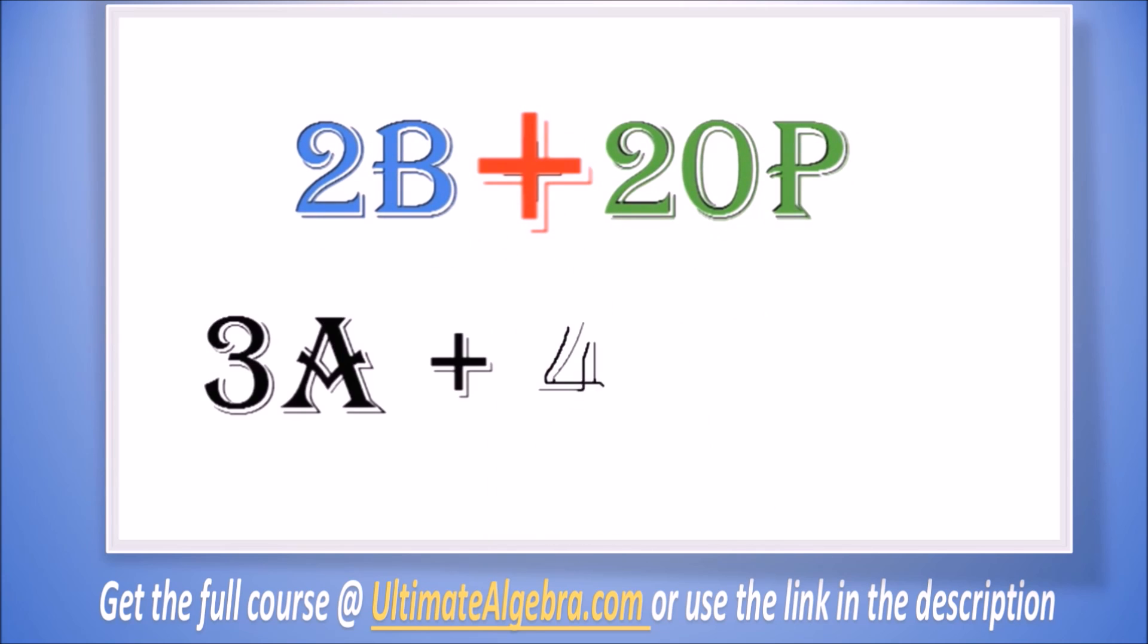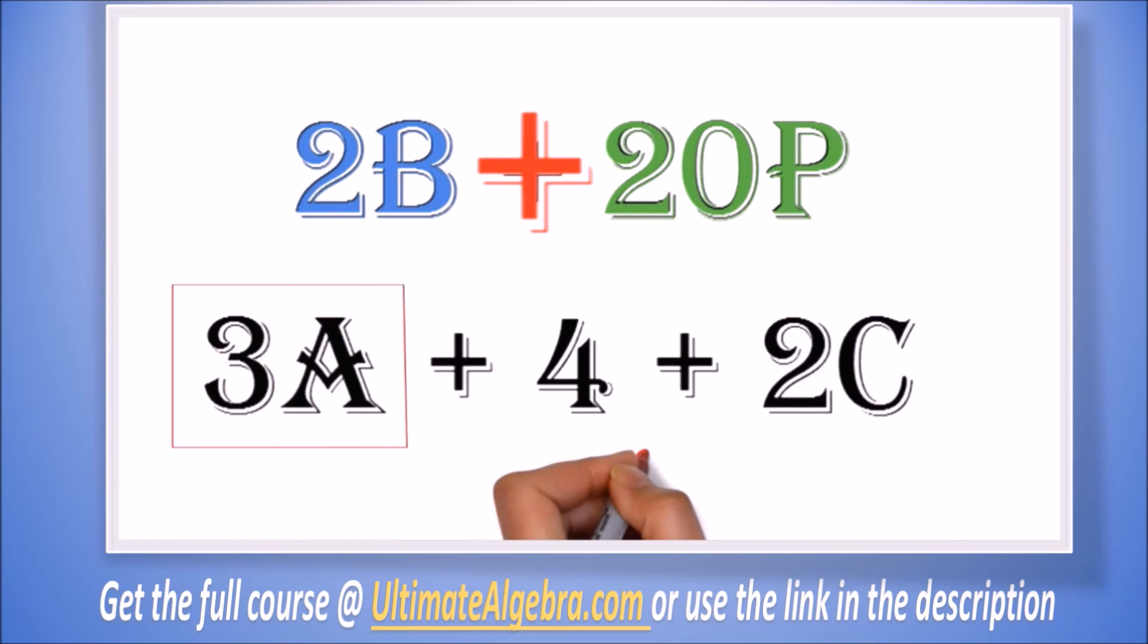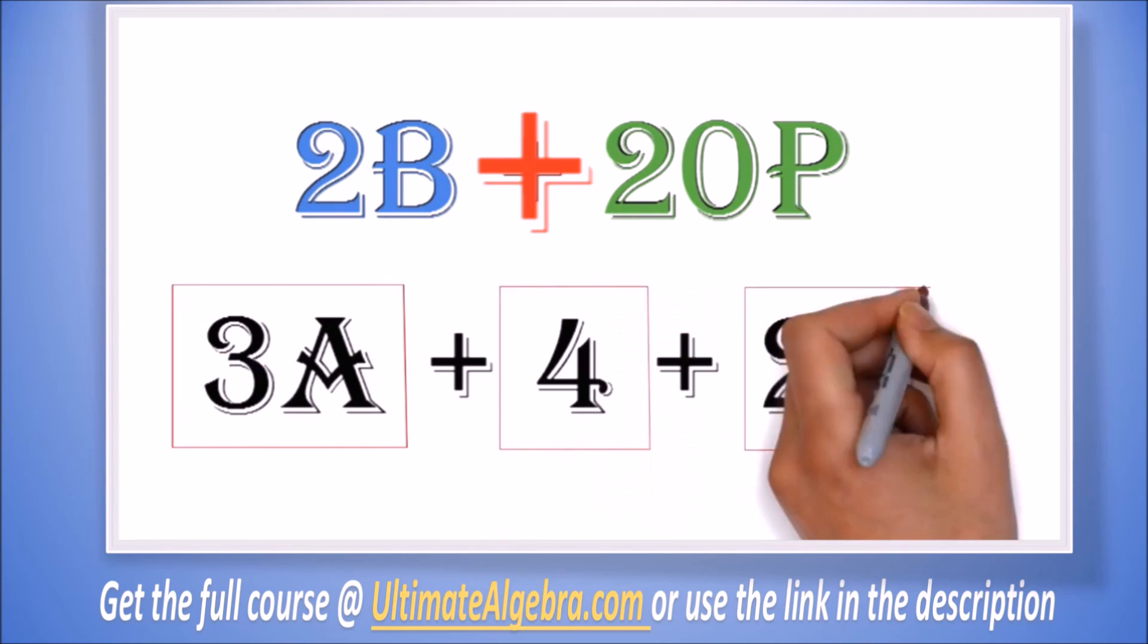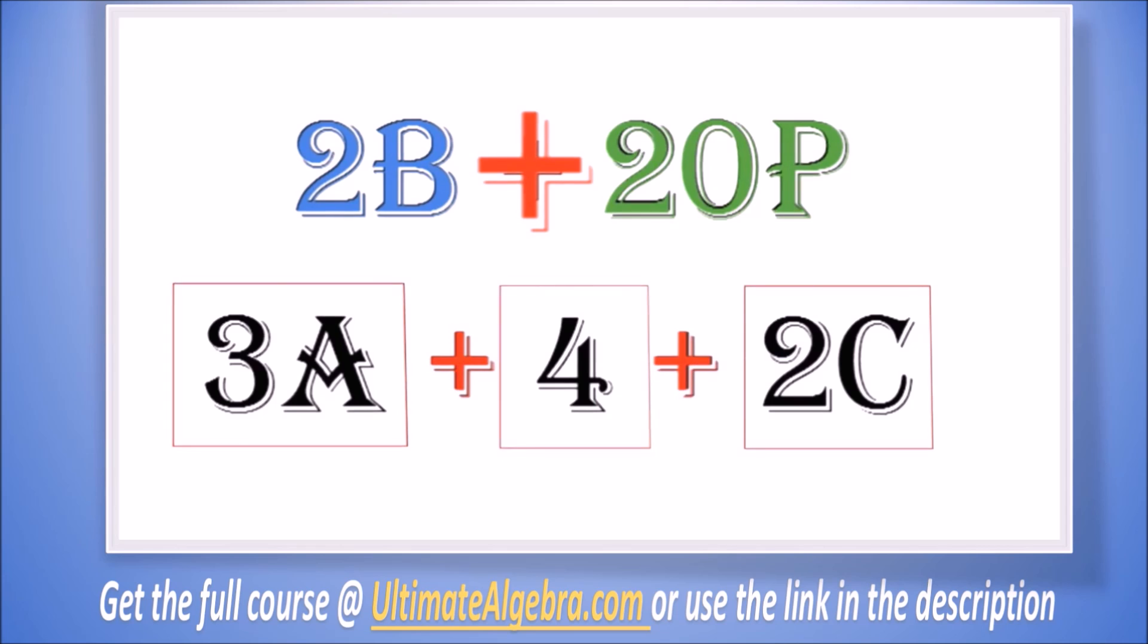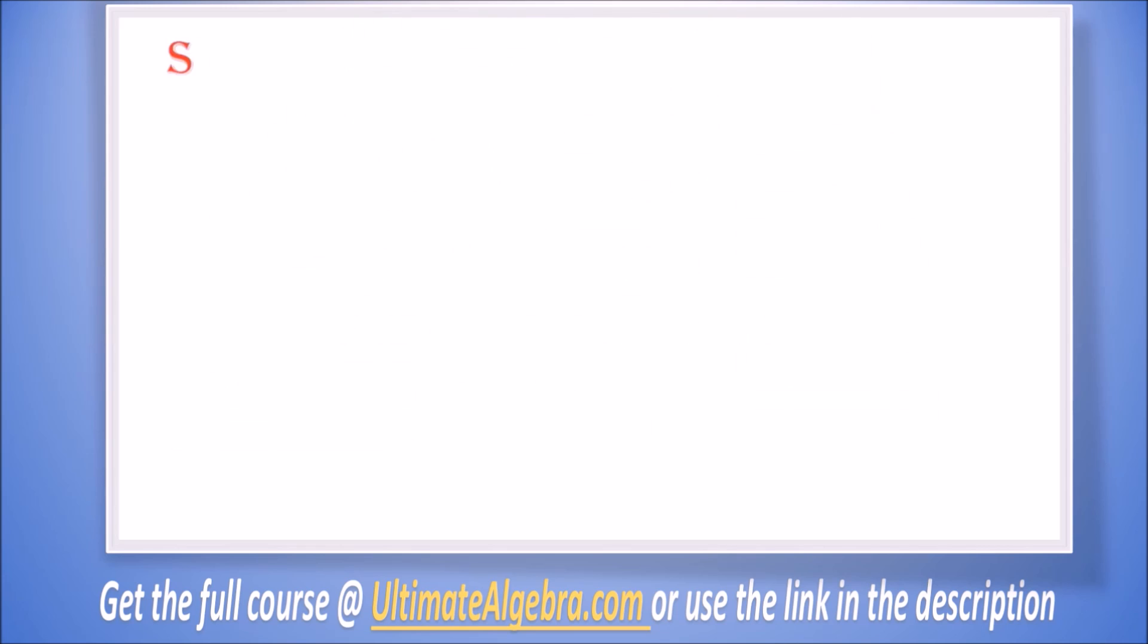Also, 3a plus 4 plus 2c has three terms: the 3a, the 4, and the 2c. Notice how they are separated by plus signs. I know you are asking, what about subtracting numbers?